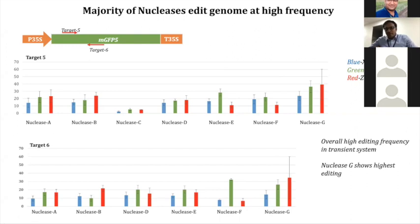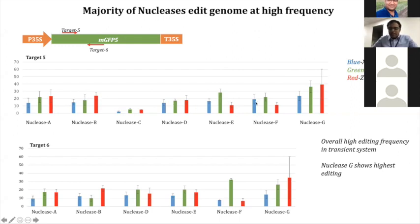The first question was about editing efficiency, and the second question was whether there is a temperature effect on editing efficiency using these enzymes. What we found was that overall all the enzymes give higher editing efficiency — anything from 10% to 60% editing efficiency.